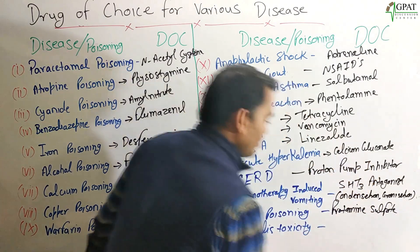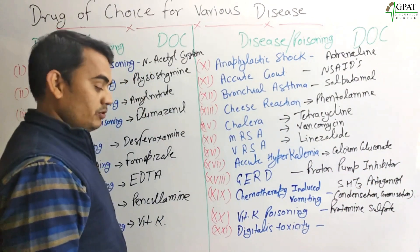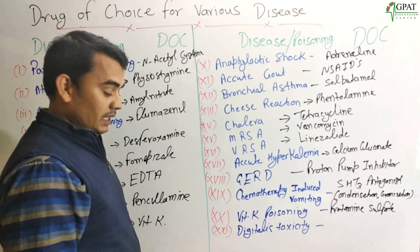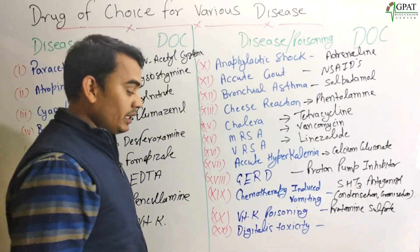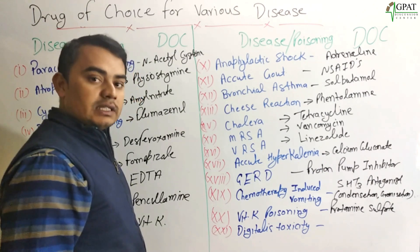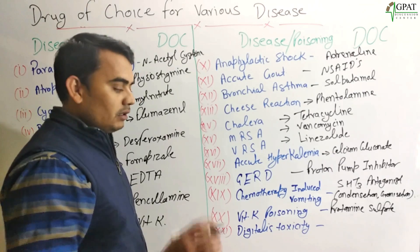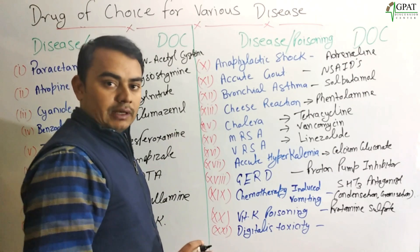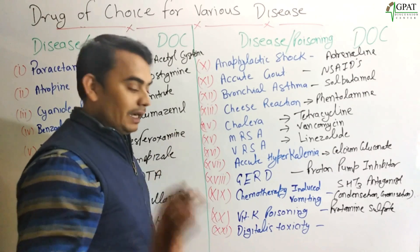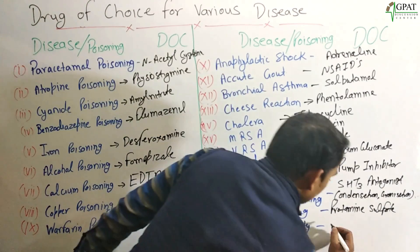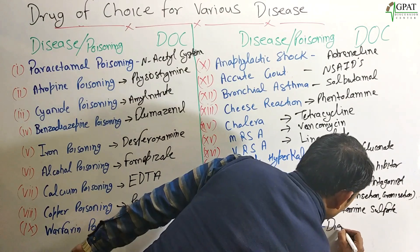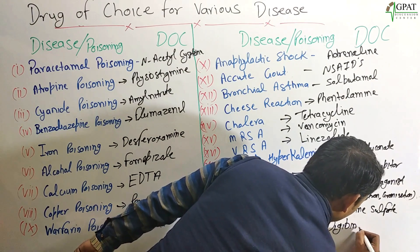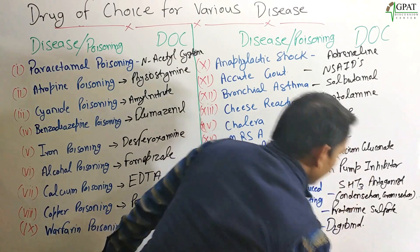Next: Vitamin K poisoning. For vitamin K poisoning, Protamine Sulphate is given as the drug of choice. Next: Digitalis toxicity — very important. For digitalis toxicity, the recombinant DNA technology-developed Digibind is the drug of choice.